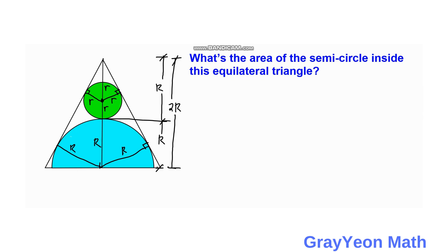Next, we focus on the smaller 30-60-90 triangle near the green circle. If the shorter leg is small r, then the hypotenuse should be 2 times small r, and the radius below is also r. So by inspection, capital R is equal to 3 times small r.